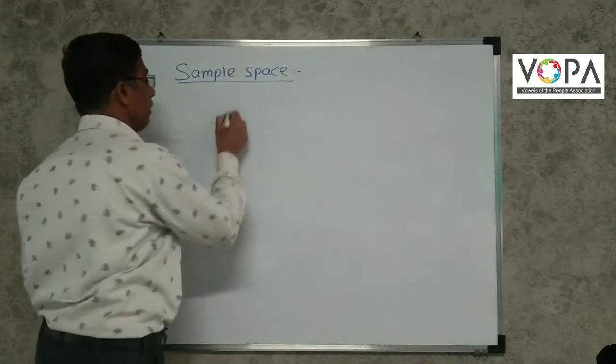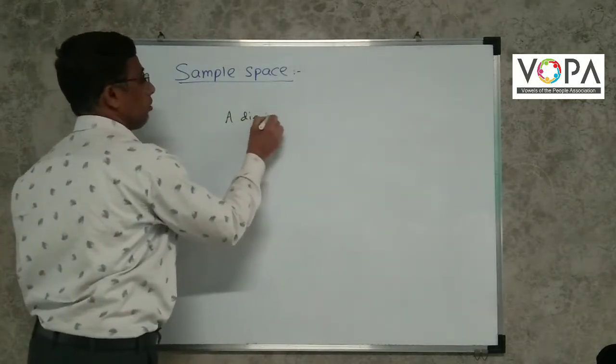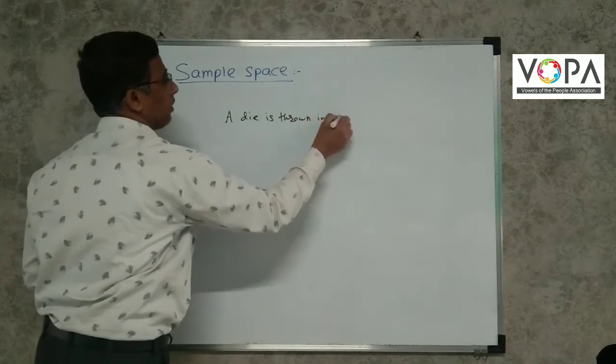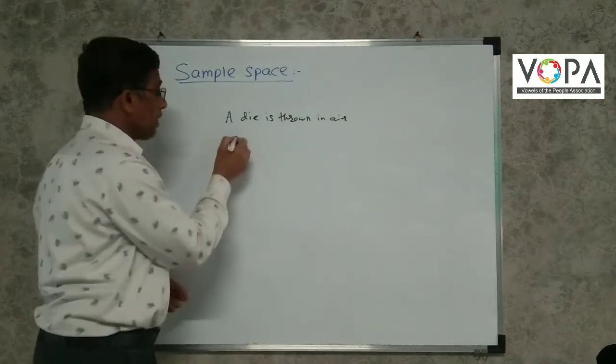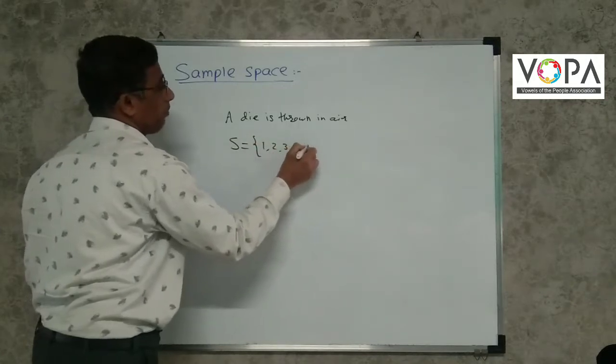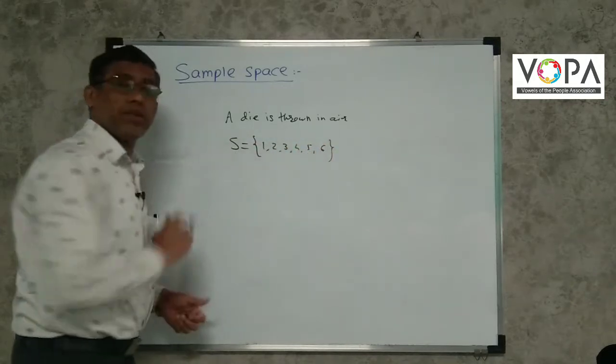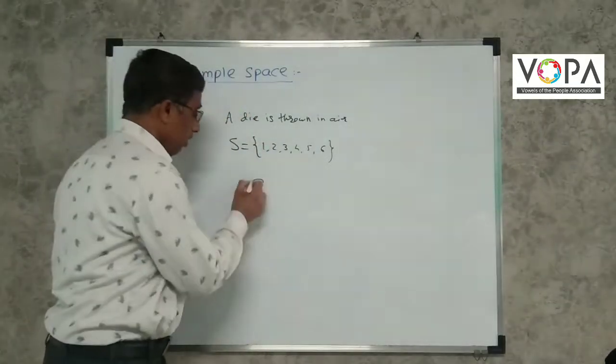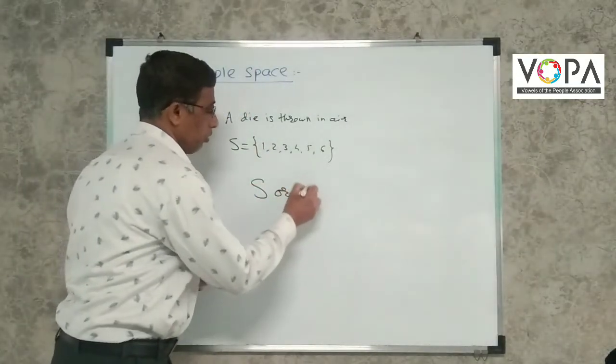suppose a die is thrown. Then what we get? S equals 1, 2, 3, 4, 5, 6. This is sample space. Sample space is denoted by S or omega.